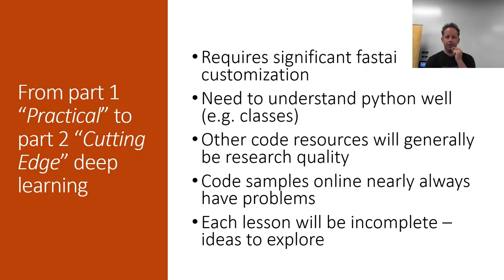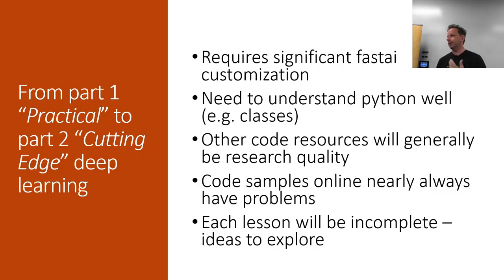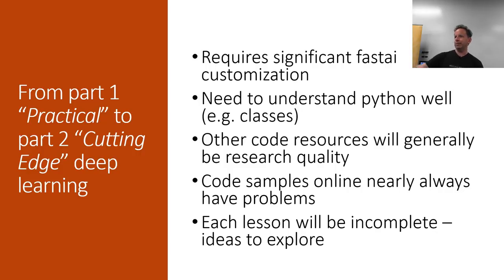As I cover these research-level topics, I often refer to code that academics have put up to go along with their papers, or example code on GitHub. I nearly always find that there's some massive critical flaw. Be careful about taking code from online resources and assuming that if it doesn't work for you, you've made a mistake. This kind of research-level code is just good enough that they were able to run their particular experiments. So you should be ready to do some debugging.